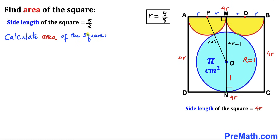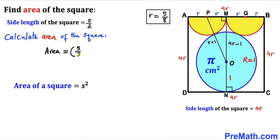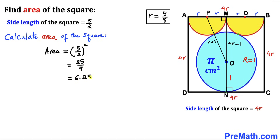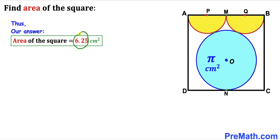For the final step, we calculate the area of square ABCD using area equals S squared. With side length S equals 5/2, the area equals (5/2) squared, which equals 25/4, or 6.25. So the area of square ABCD turns out to be 6.25 centimeter square. Thanks for watching — please don't forget to subscribe to the channel for more exciting videos!